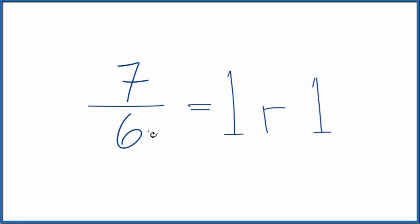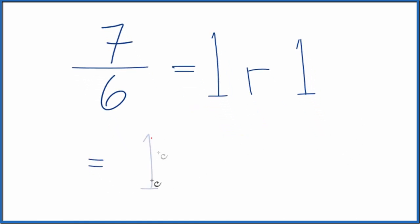So the fraction 7/6, that's 1 remainder 1. And now we can write our mixed number. So we take the whole number, that's the 1, and then we take the remainder, also 1, and we divide that by the original denominator, 6. And we end up with 1 and 1/6.